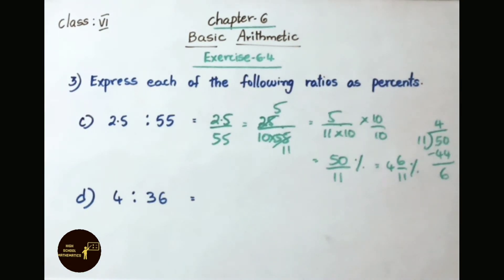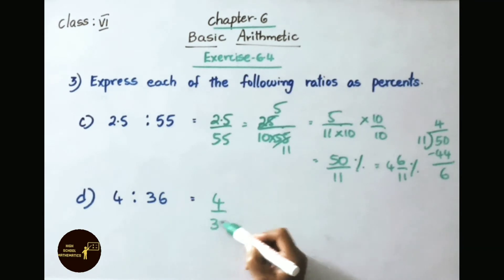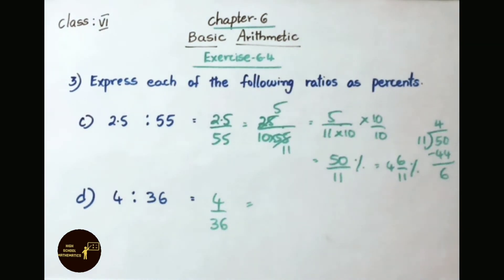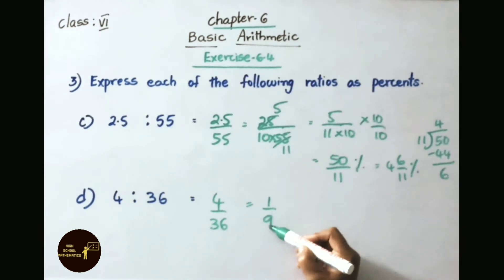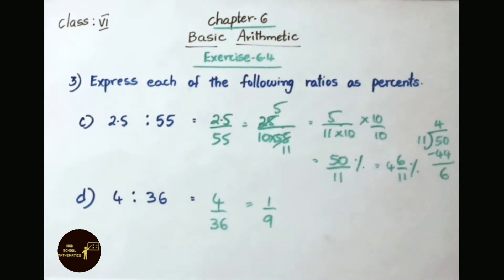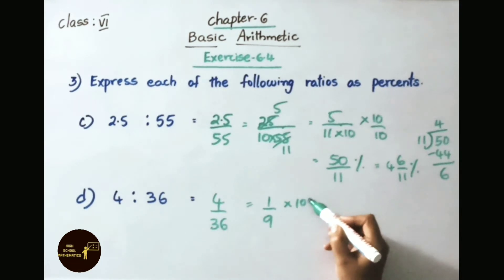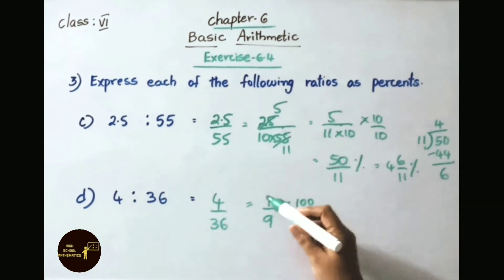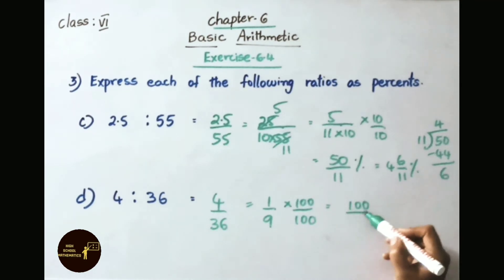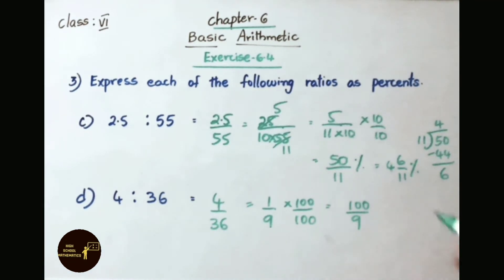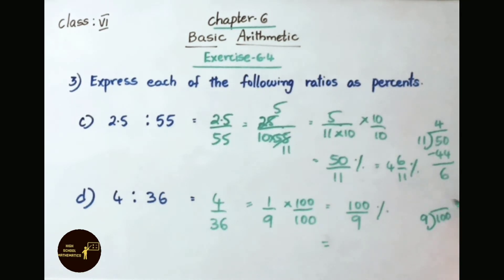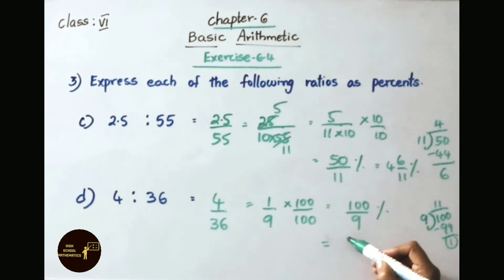Question D: 4 is to 36. Written as 4 by 36. Simplifying using the 4 times table: 4 ones are 4, and 4 nines are 36, giving 1 by 9. Multiply numerator and denominator by 100: 1 into 100 is 100 by 9. Dividing 100 by 9: 9 elevens are 99, remainder 1. So the answer is 11 and 1 by 9 percent.